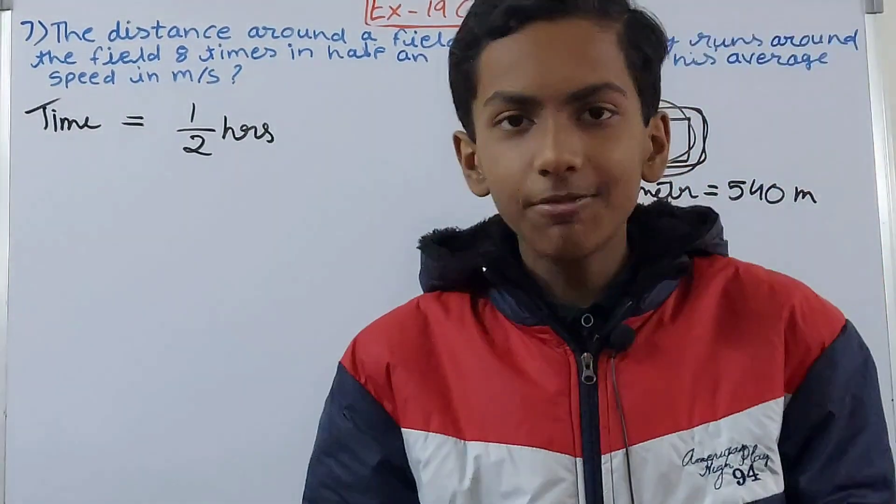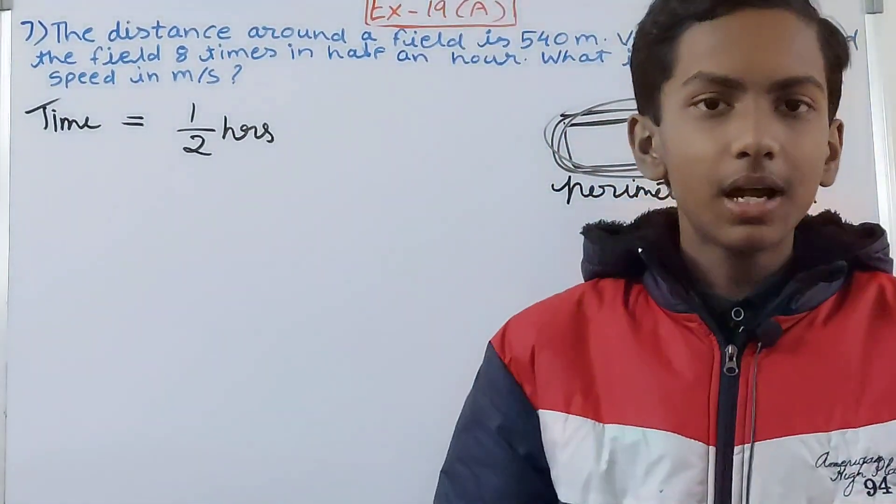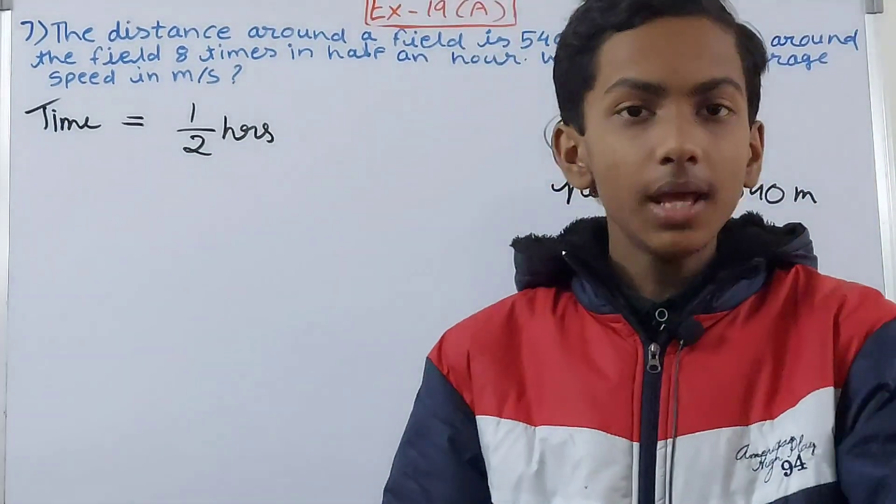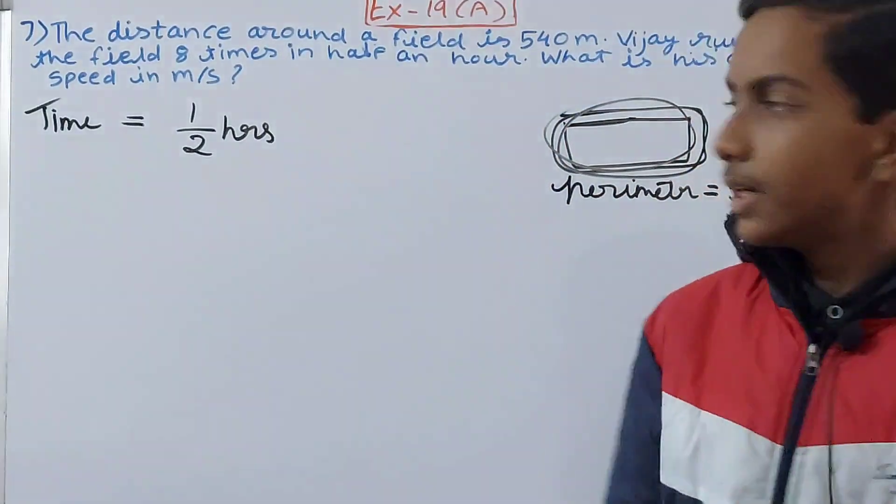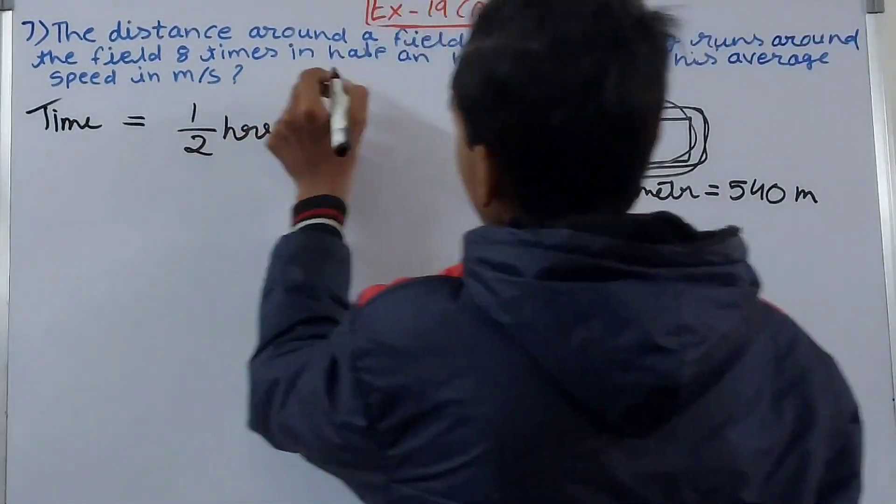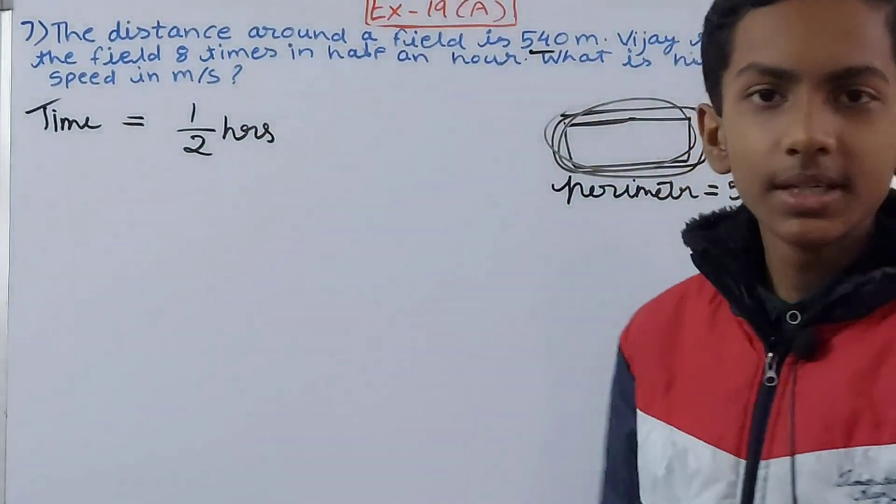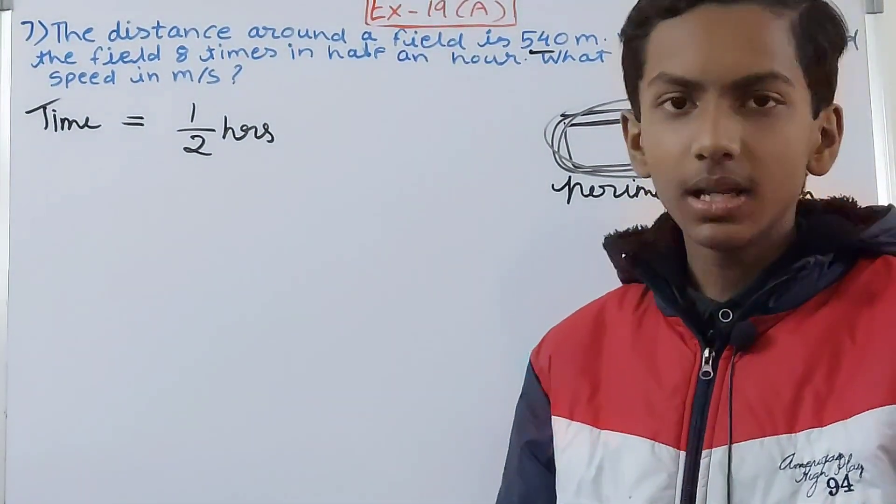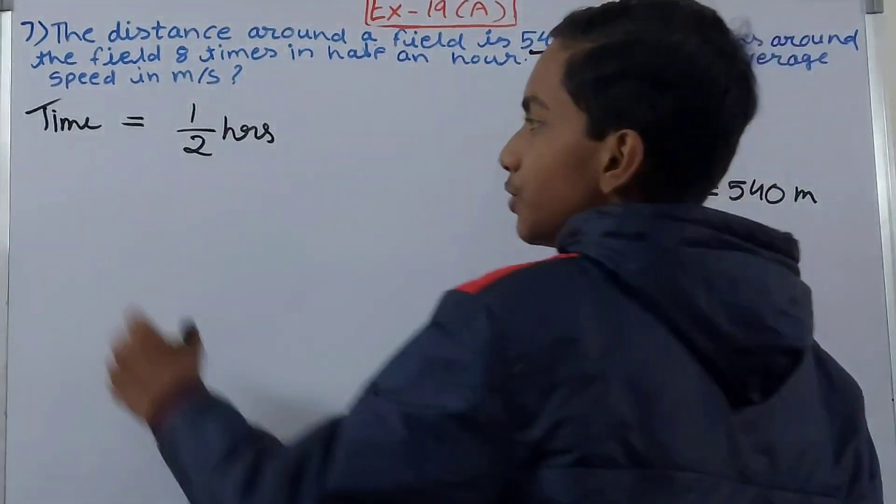Then it says that around the field is 540 meters. So now we need to identify the distance he has traveled in total - that is the distance he has traveled by going around 8 times the field. So one time if he goes then it's 540 meters. Second time if he travels then 540 plus 540, that is multiplied by 2.